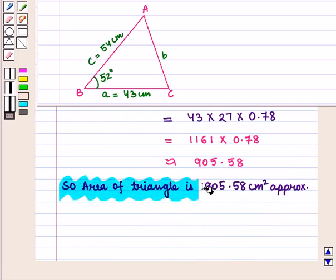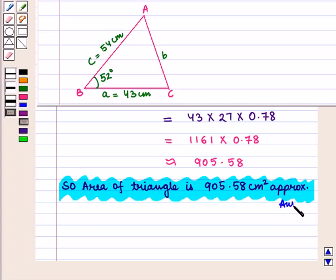Area of triangle is 905.58 square centimeters approximately which is the required answer.